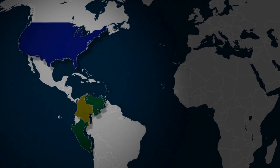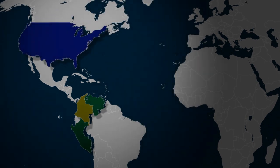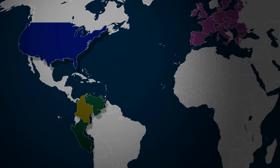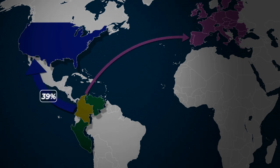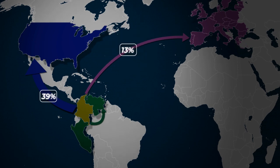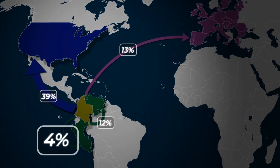Este caso de aplicación tendrá como ejemplo a Colombia y su distancia comercial. Como podemos ver en este Mapamundi, los principales socios comerciales para Colombia entre el periodo 2007 y 2010 son Estados Unidos con un 39%, la Unión Europea aproximadamente con un 13%, Venezuela con un 12%, Ecuador con un 3% y Perú con un 4%.